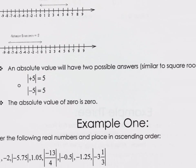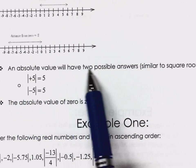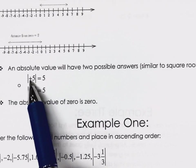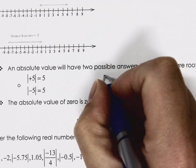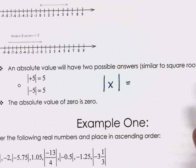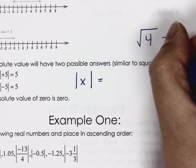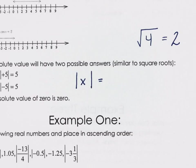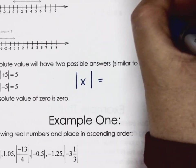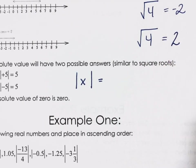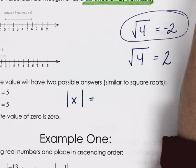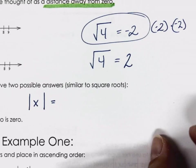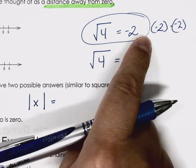If we put an X inside absolute brackets, the absolute value of positive five is positive five, and the absolute value of negative five is also positive five. It's similar to square roots — the square root of four gives us the positive principal root of two, but we have to be smart enough to know it can also be negative two, because negative two times negative two brings us back to positive four.